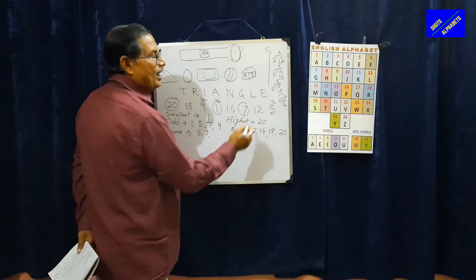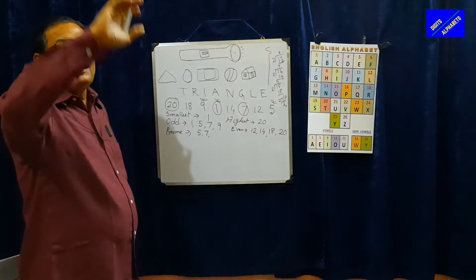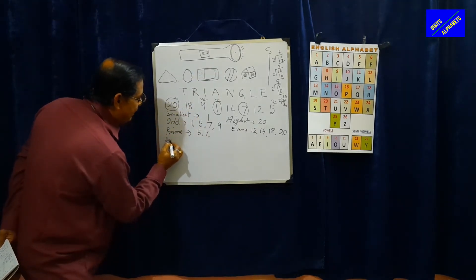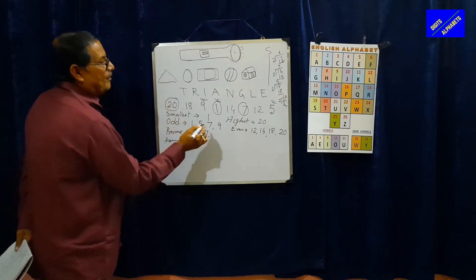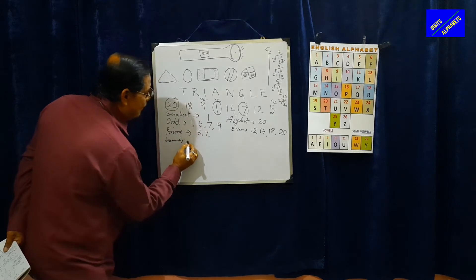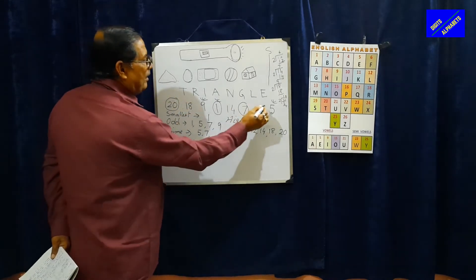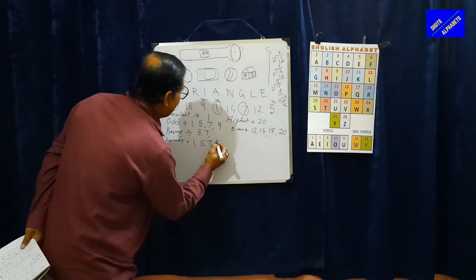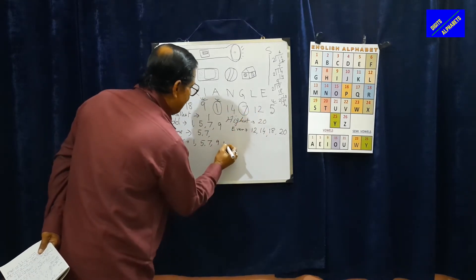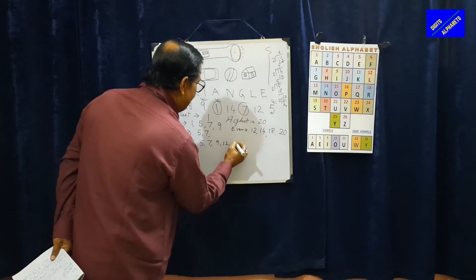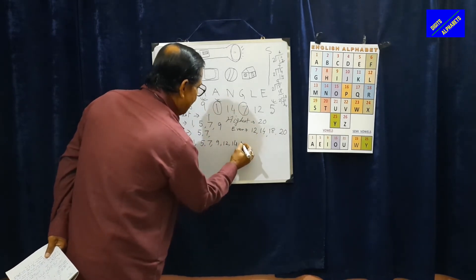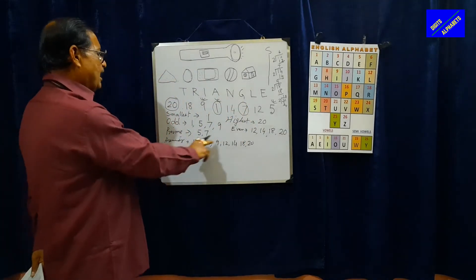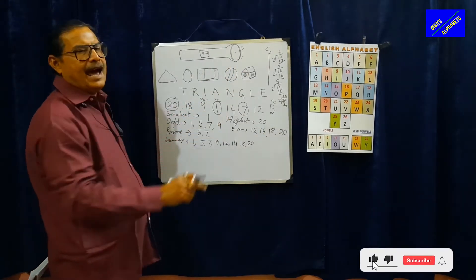Now if I tell you, just arrange these numbers in ascending order. The smallest number comes first: 1, then 5, then 7, then 9, then 12, then 14, then 18, and at last 20. In ascending order we arrange them this way.